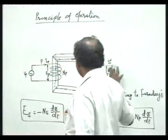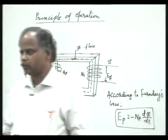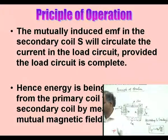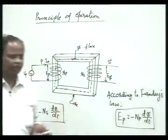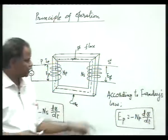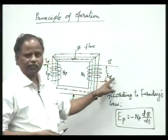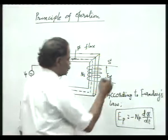We have come up to this point — there is an EMF induced in the secondary. The mutually induced EMF in the secondary coil S will circulate current in the load circuit, provided the load circuit is completed. Can you say that there is a load current here? Current cannot flow here because the coil is in open condition. That means in open circuit there will not be any current — current is zero.